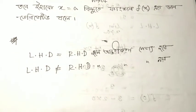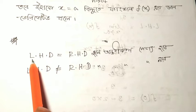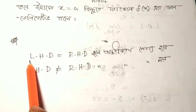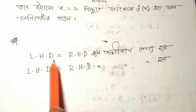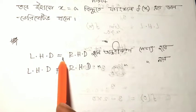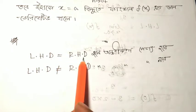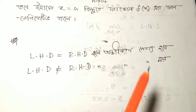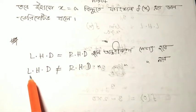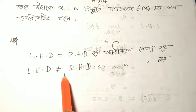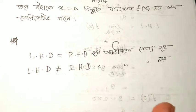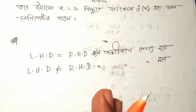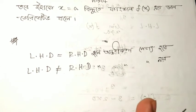We are going to talk about the left-hand derivative and the right-hand derivative. If the left-hand derivative and the right-hand derivative do not have the same value, then the derivative value does not exist.